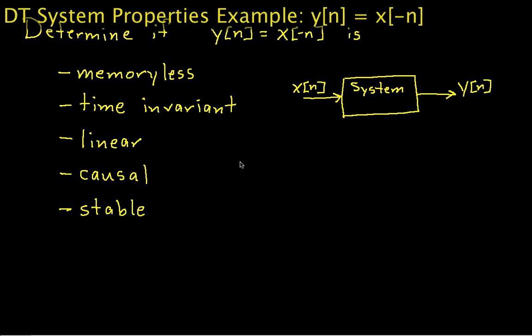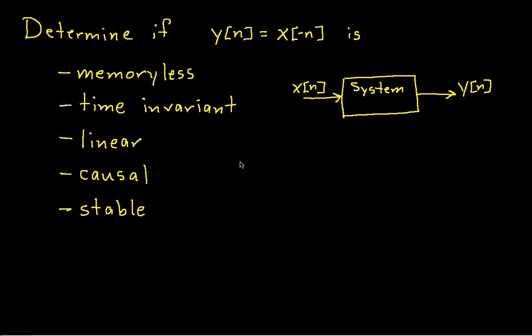The properties that we'll look at are whether the system is memoryless, time invariant, linear, causal, and stable.